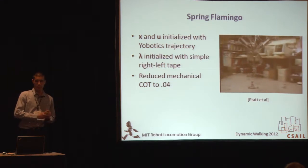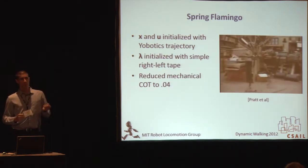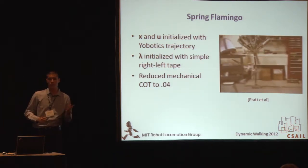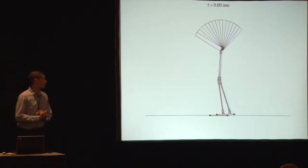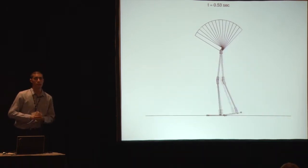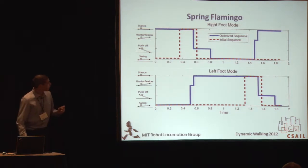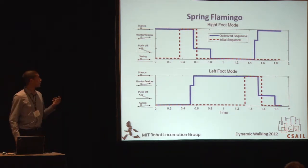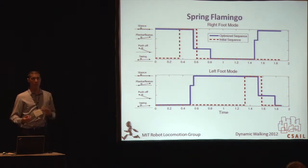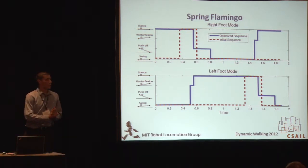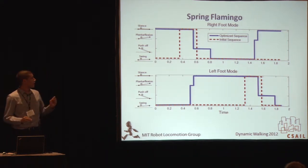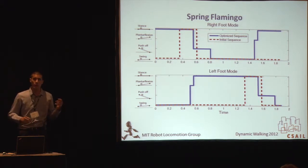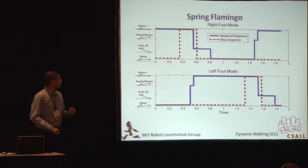The first system we looked at is the Spring Flamingo. We took a trajectory from Jerry and others and looked to reduce mechanical cost of transport, getting the number down to 0.04 — similar to the mechanical COT mentioned by the Ranger team. The resulting behavior is a very lazy gait, swinging the foot barely over the ground to reduce COT. The mode sequence that emerges shows four modes per foot with two contact points per foot. We initialized the program with a coarse right-left motion, giving very little information to the optimizer, and a distinct heel-strike and toe-off emerged naturally.